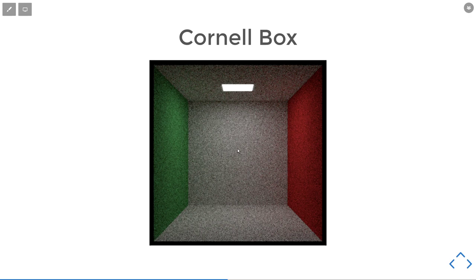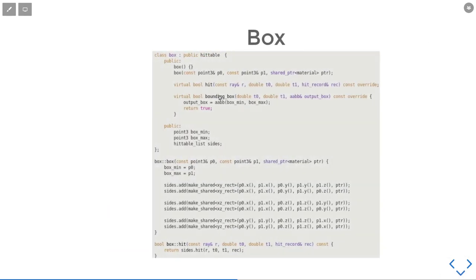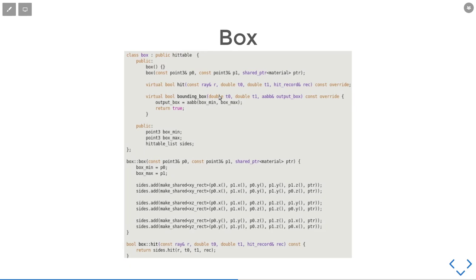This Cornell Box is really noisy because the light is small on top of it. In book three, when we talk about importance sampling, we will try to address this issue without sacrificing too much performance, like just increasing the sample size.